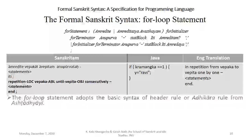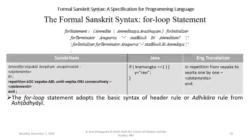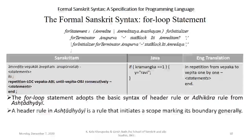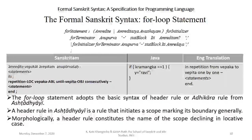For loop statement. The for loop statement adopts the basic syntax of the header rule or 'adhikar' rule from Ashtadhyayi. A header rule in Ashtadhyayi is a rule that initiates a scope marking its boundary generally. Morphologically, a header rule constitutes the name of the scope declining in locative case.